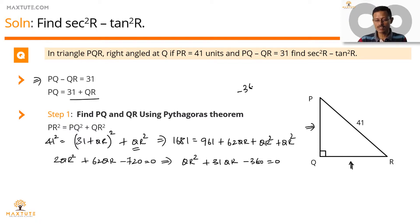Product is equal to minus 360. Sum is equal to plus 31. 40 into 9, the product will be 360. One of them should be positive, the other should be negative. The sum is plus 31, so let's go with plus 40 and minus 9.